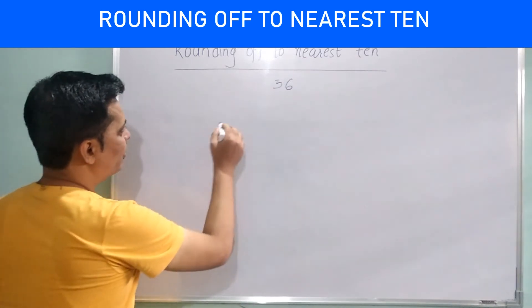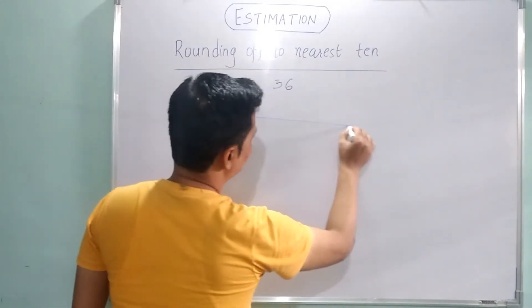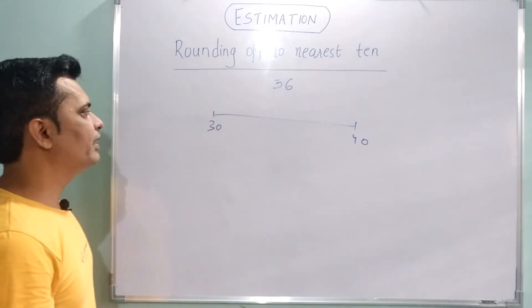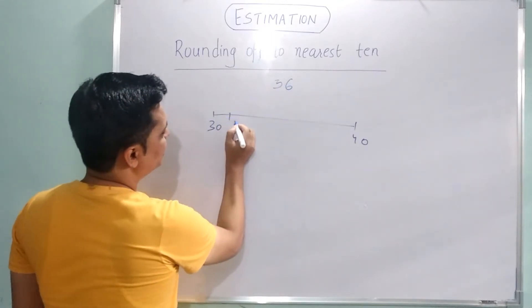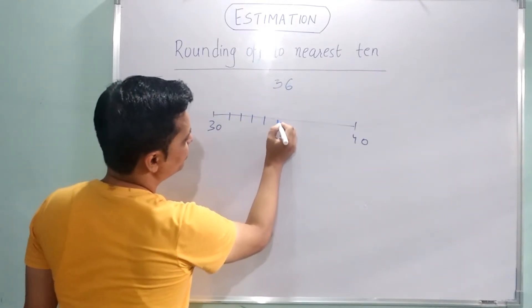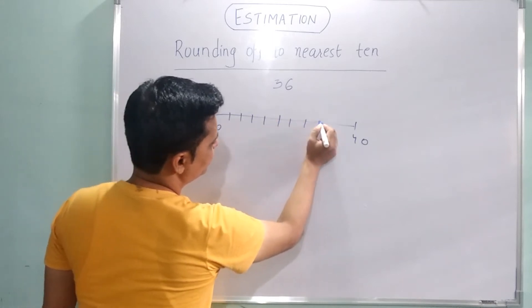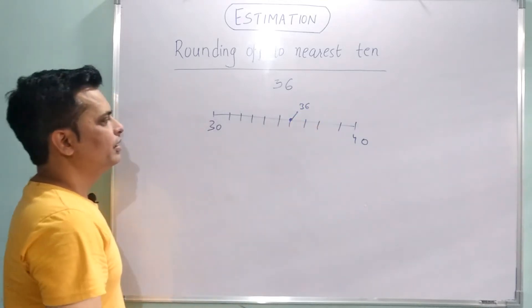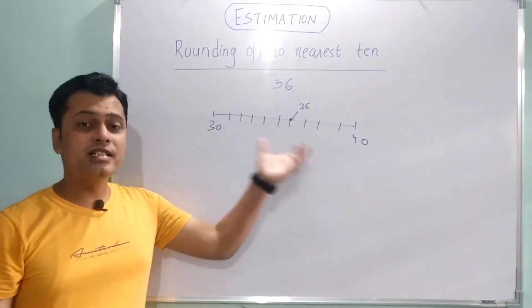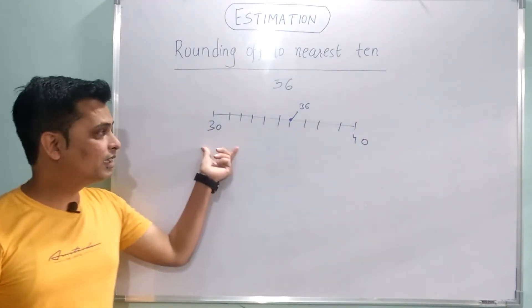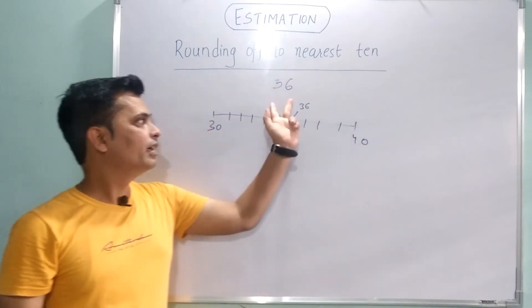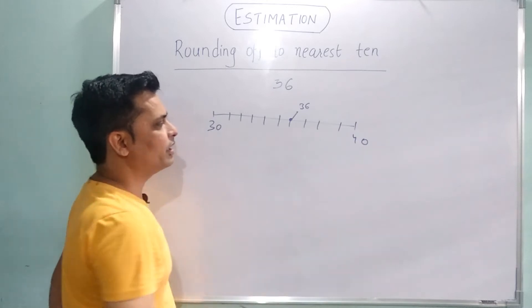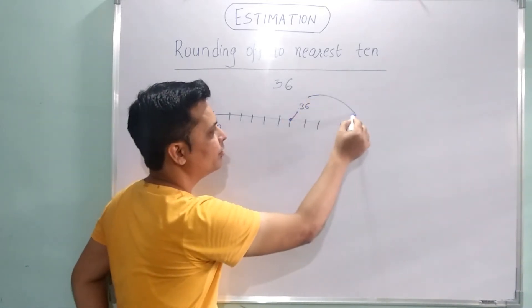36 is the number. You can write it between 30 and 40 on a number line. Now, 30 is here, and counting up: 31, 32, 33, 34, 35, 36, 37, 38, 39, and 40. So 36 is somewhere here. Is the nearest 10 equal to 40 or 30?